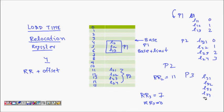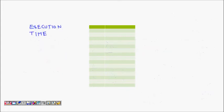However, if P3 has five lines of code but only four free memory locations remain, it will not fit. If the code is four lines or fewer, it can be accommodated using the relocation register. This is load-time address binding and instruction binding.